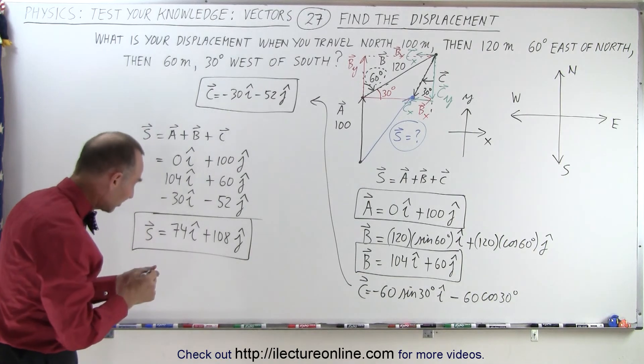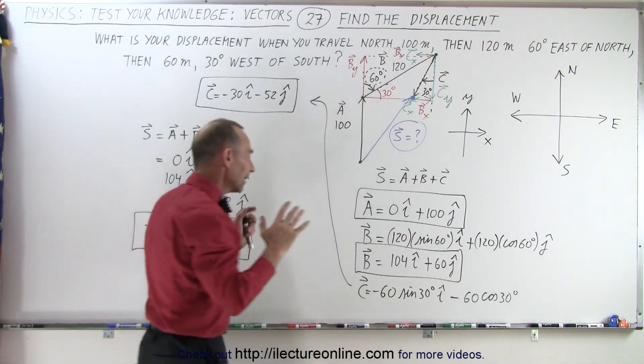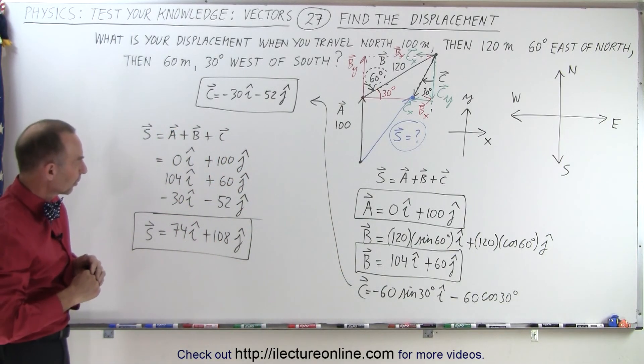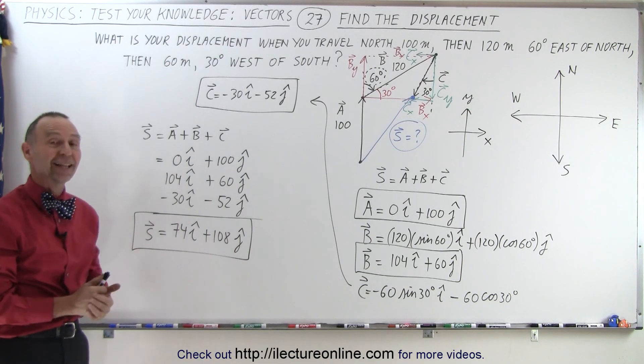And does that make sense based upon what we see? 74 in the I direction, 108 in the J direction. It looks fairly good, fairly comfortable that that is probably the right answer if I didn't make any mistakes. And that is how it's done.